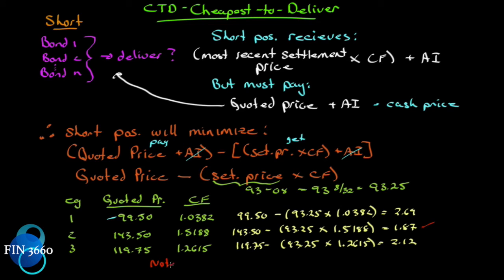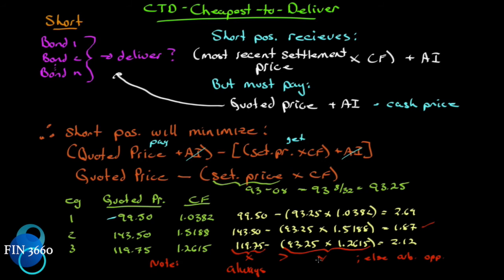An important note: you might wonder whether there's any situation where you can actually make money — whether the cost to deliver could be negative. Can you buy a bond, deliver it, and get more money than you paid? Let's call what you pay X and what you get Y. X must always be greater than Y, or else there is an arbitrage opportunity. The price will always be greater; otherwise you could enter a riskless trade — take the deliverable bond, deliver it, and actually get more than you paid out.